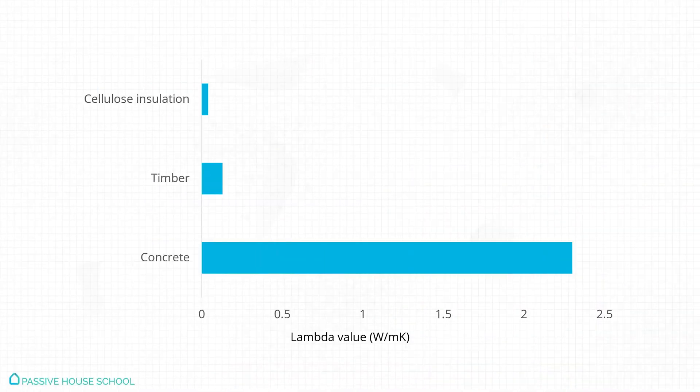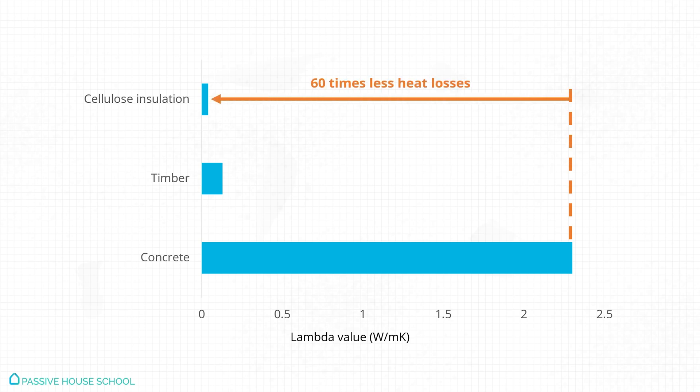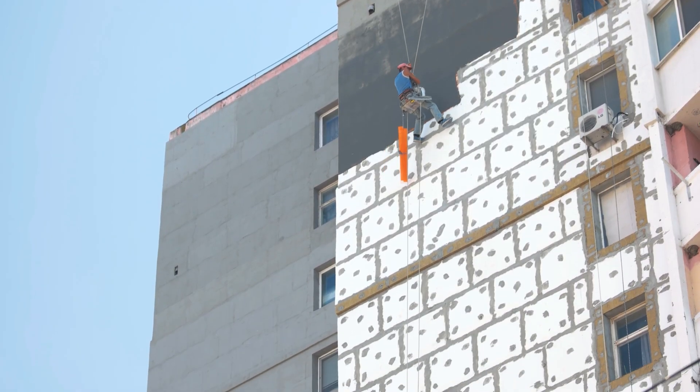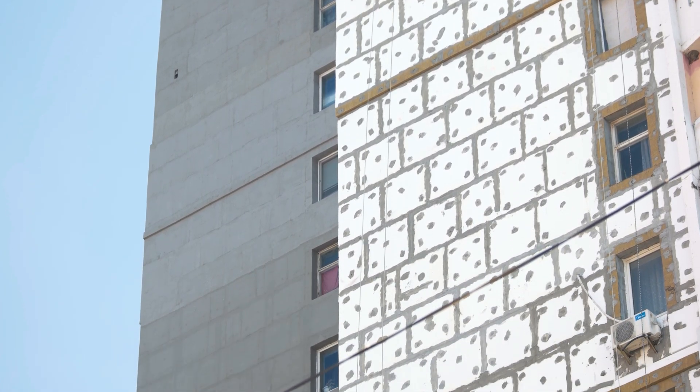Lambda values are essential when comparing insulation qualities of different materials. For example, concrete has a lambda of around 2.3 watts per meter Kelvin, timber has 0.13 watts per meter Kelvin, and cellulose insulation has a lambda of around 0.04 watts per meter Kelvin. So we lose almost 60 times less heat through cellulose insulation compared to concrete, and three times less than timber. This principle also applies when comparing different types of the same material, such as expanded polystyrene — EPS — where various products on the market each have slightly different insulating properties, and lambda values let us determine which offers better performance.